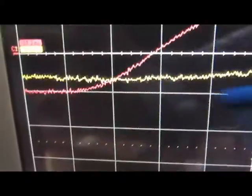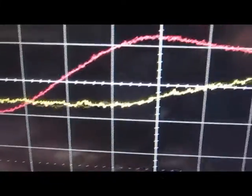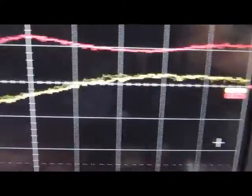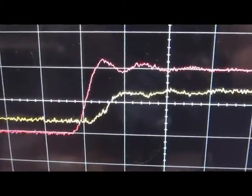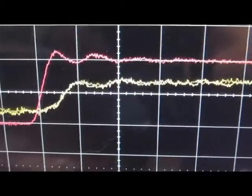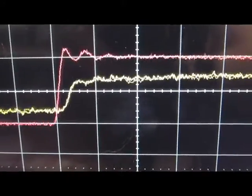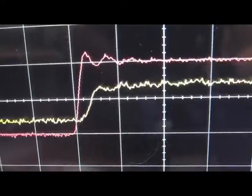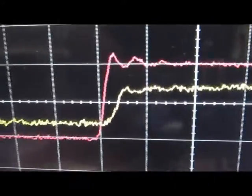This is looking at 10 nanoseconds per division. And again the pink is our one to one probe and the yellow our 10,000x probe. This is at 20 nanoseconds per division. And 50 nanoseconds per division. 100 nanoseconds. It does a fair job tracking it.